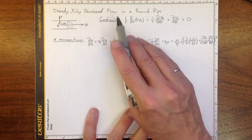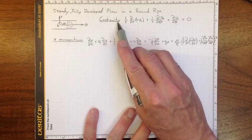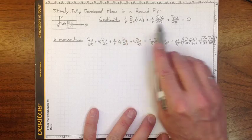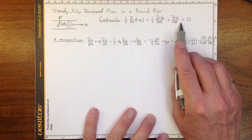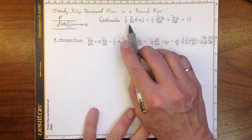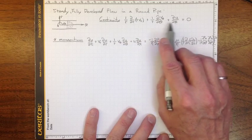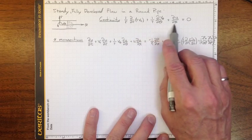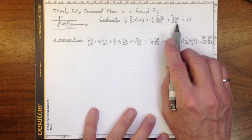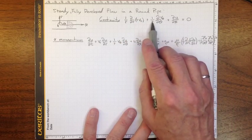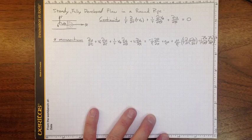If we go to any fluid mechanics textbook, we can find the incompressible continuity equation in polar coordinates. We've got an equation with three terms — this is the divergence of velocity equal to zero, just as in Cartesian coordinates, but we pick up some extra elements because of the polar nature of the coordinate system.